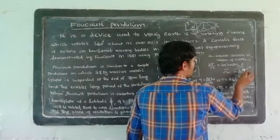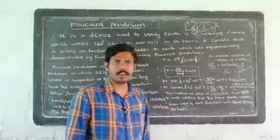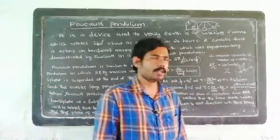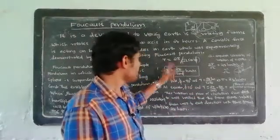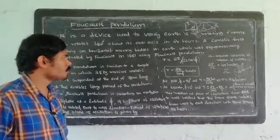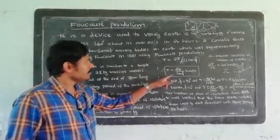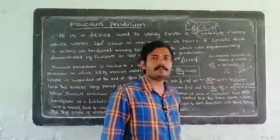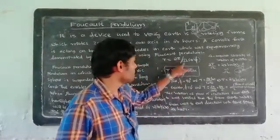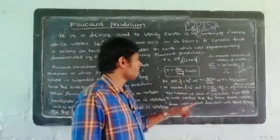Here we have the vertical and horizontal components of omega. The horizontal components are omega cos φ, and the vertical components are omega sin φ. The horizontal components do not contribute here; the vertical components govern the plane of oscillation. Therefore, the time period of rotation of the plane of oscillation of the Foucault pendulum is T = 2π / (omega sin φ). Since 2π / omega equals 24 hours, substituting gives T = 24 / sin φ hours.